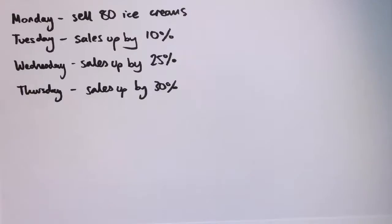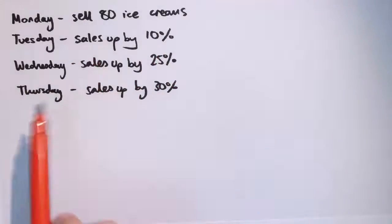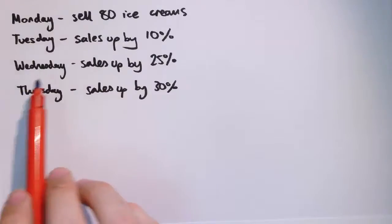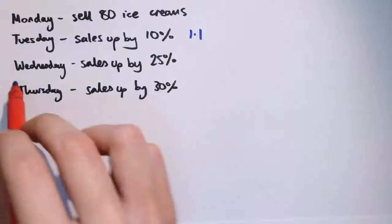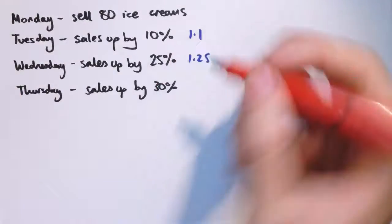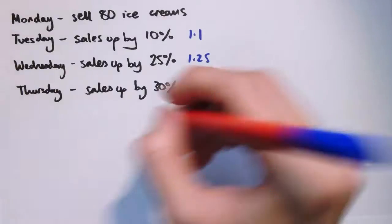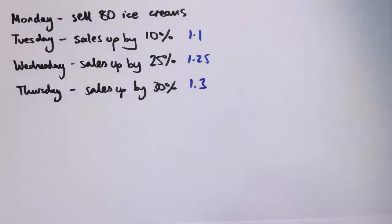So this works just as well if we've got more than two scale factors. Maybe I've got an ice cream van and I sell 80 ice creams on the first day, on a Monday. The next day does a bit better, increase by 10%, that would be a scale factor of 1.1. The next day even better, scale factor of 1.25 for a 25% increase. Thursday an increase of 30%, maybe it's getting really hot by the end of the week, scale factor of 1.3.